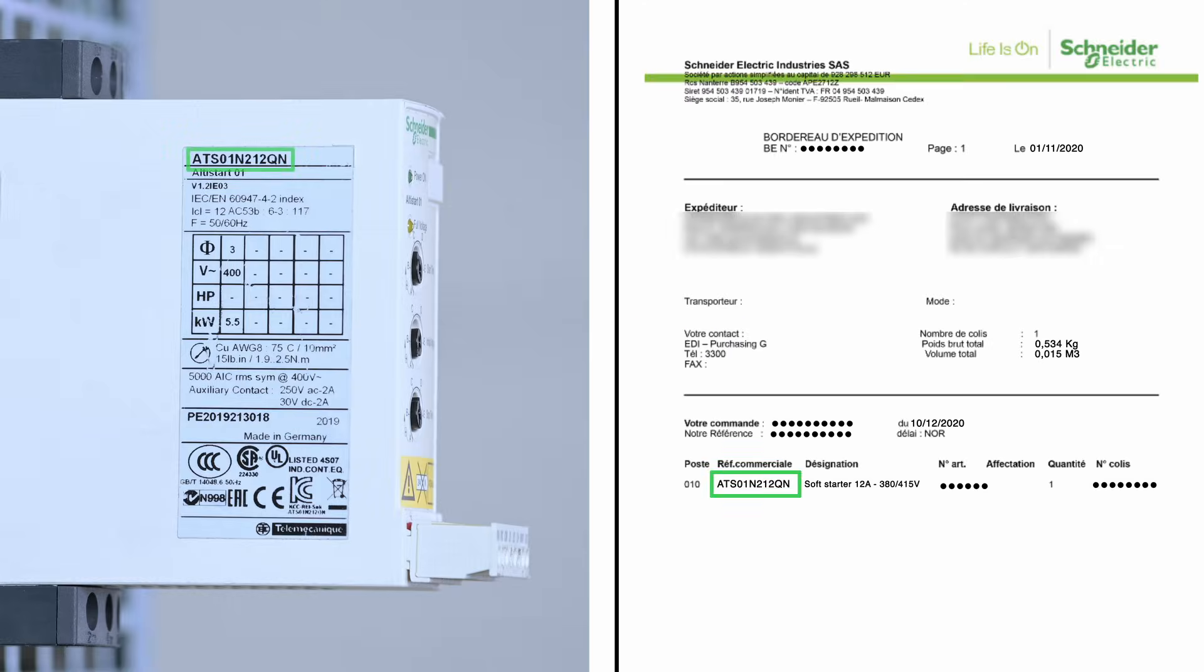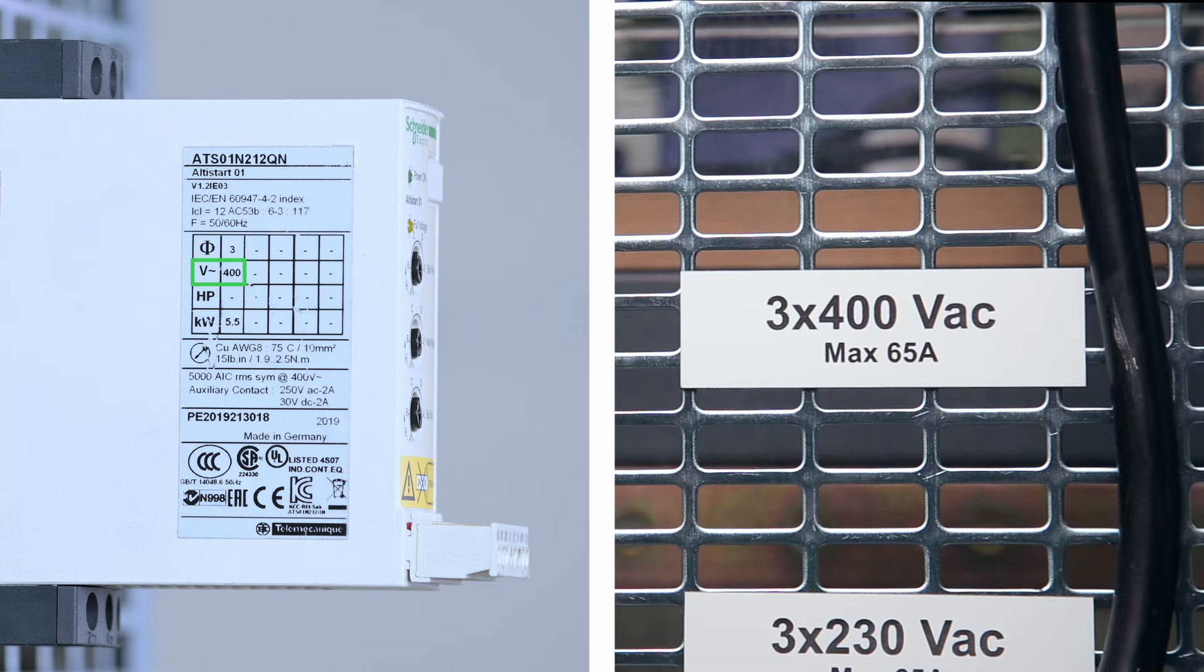Product Receipt. Ensure that the received ATS-01 soft starter reference is the same on the product nameplate and on the purchasing order. Product voltage range should be in accordance with the mains and motor used.